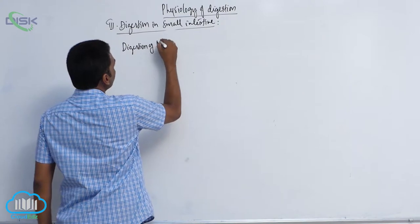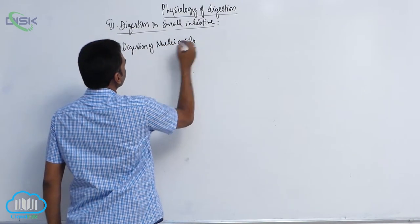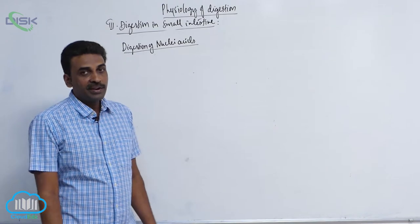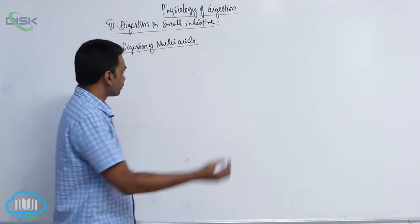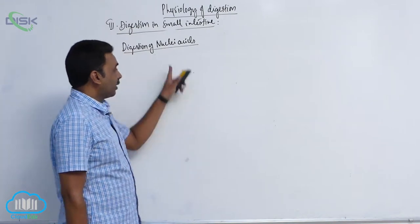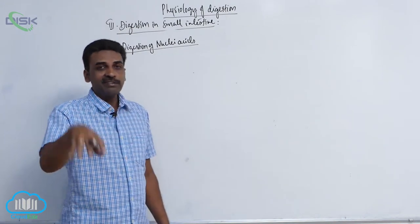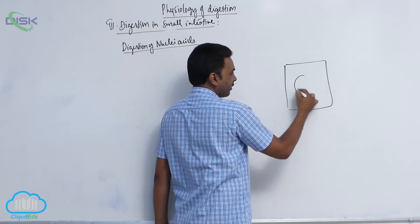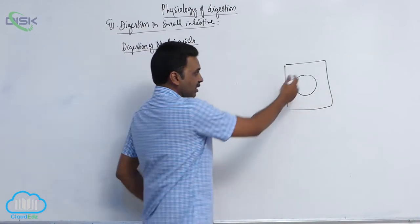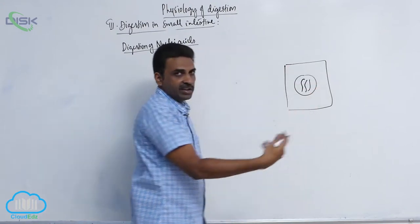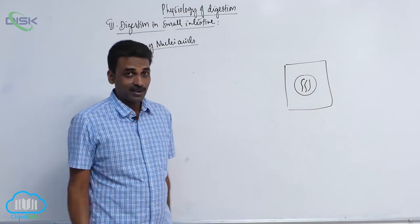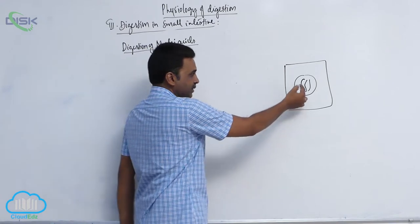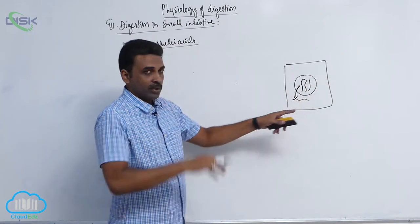Now, digestion of nucleic acids. When we say nucleic acids, we mean DNA and RNA. In the food we take — whether plant or animal — the cells contain nuclei, and in the nucleus there is DNA or RNA. So we are speaking about that DNA and RNA present inside the cells of our food.